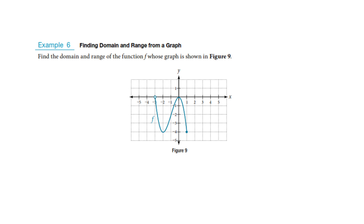Now this is what's important out of this section — I want to look at the domain and the range from a graph. To find the domain, I use a ruler and walk it up and down, moving it across the x-axis. When it hits something, that is part of the domain. Moving my ruler over this line, I first get to something at negative 3, but it's an open circle — so I start at negative 3 but don't include it. I keep moving and I'm hitting graph until I get to 1, where it stops. There I have a filled-in circle, so I get a bracket. If I kept going with my ruler, I don't hit any more graph. So I'm done.